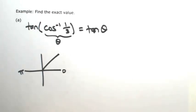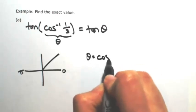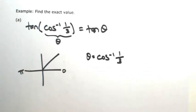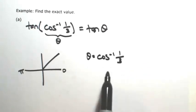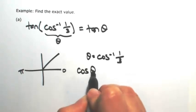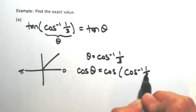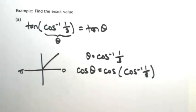We don't know what the angle is, but what we do know is that theta is the inverse cosine of 1 third. So if I want to get the 1 third by itself, I would take cosine of both sides. We'll see why I'm doing that in one second.